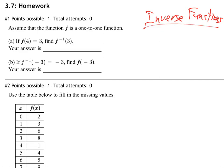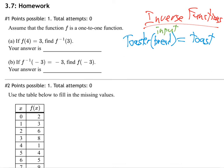So if you take a toaster and you put in bread, what do you get out? You get out toast, right? Put in bread, you get out toast. This is the input and this is the output.